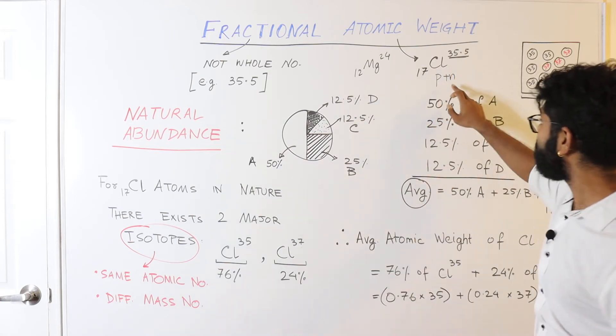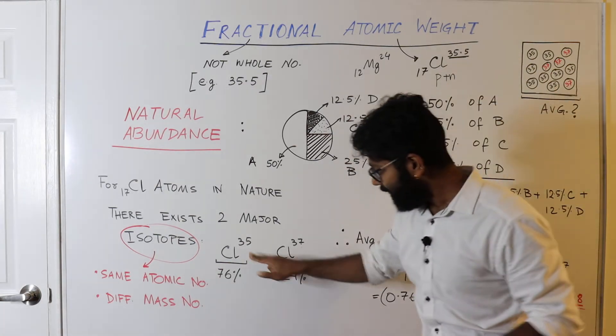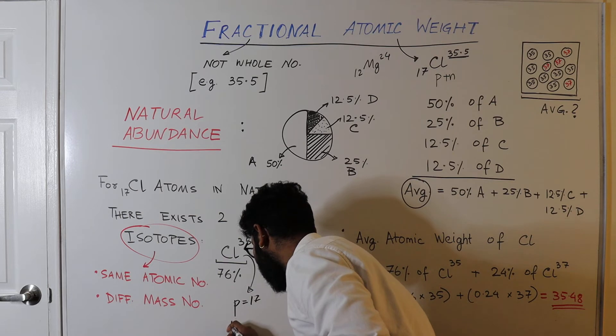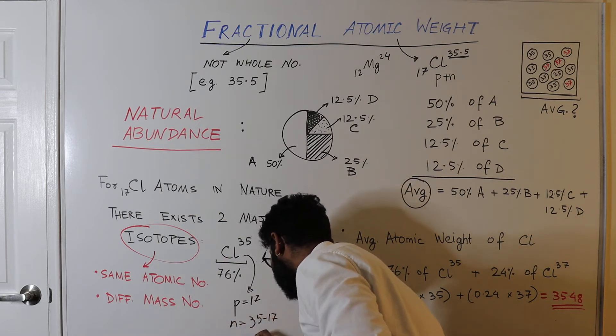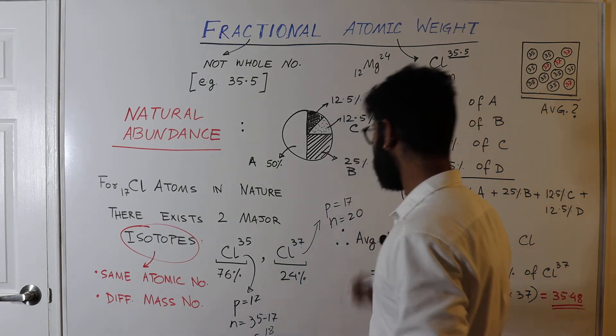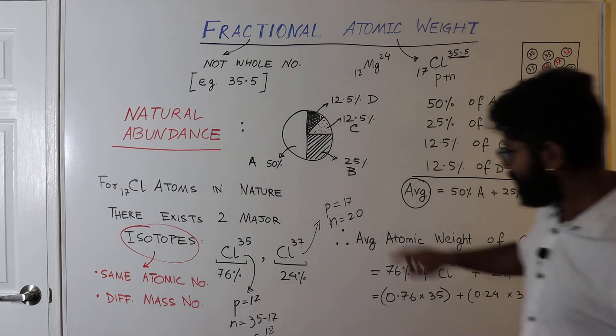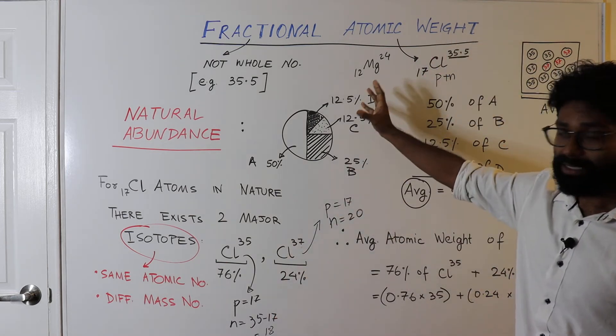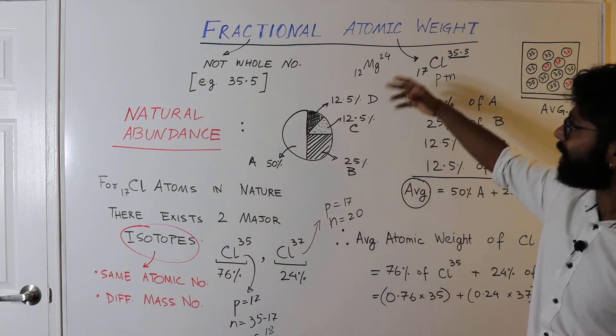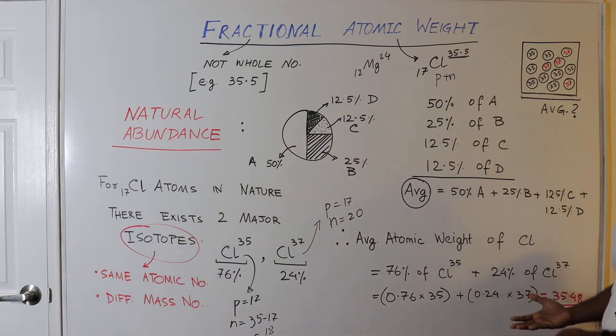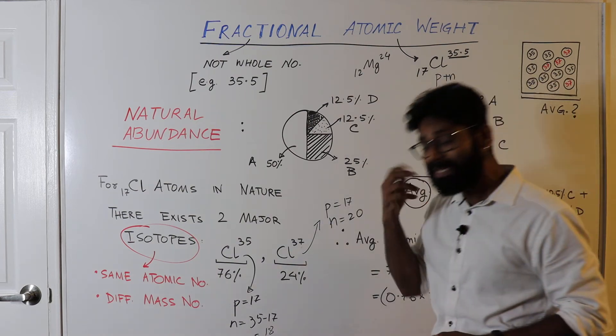35.5 doesn't mean that the proton plus neutron number is 35.5. In here, for chlorine-35, the number of protons is 17 and number of neutrons is 35 minus 17, which is 18. For this, the number of protons remains the same, but the number of neutrons becomes 20. In these two cases, the proton and the neutron numbers are different. But when you're talking about the atomic weight, this is atomic number, right? But when you're talking about atomic weight, you will have to consider the two isotopes in their natural abundance, and you have to calculate the average atomic weight, which comes out to be 35.5. And this is the reason why fractional atomic weight exists.